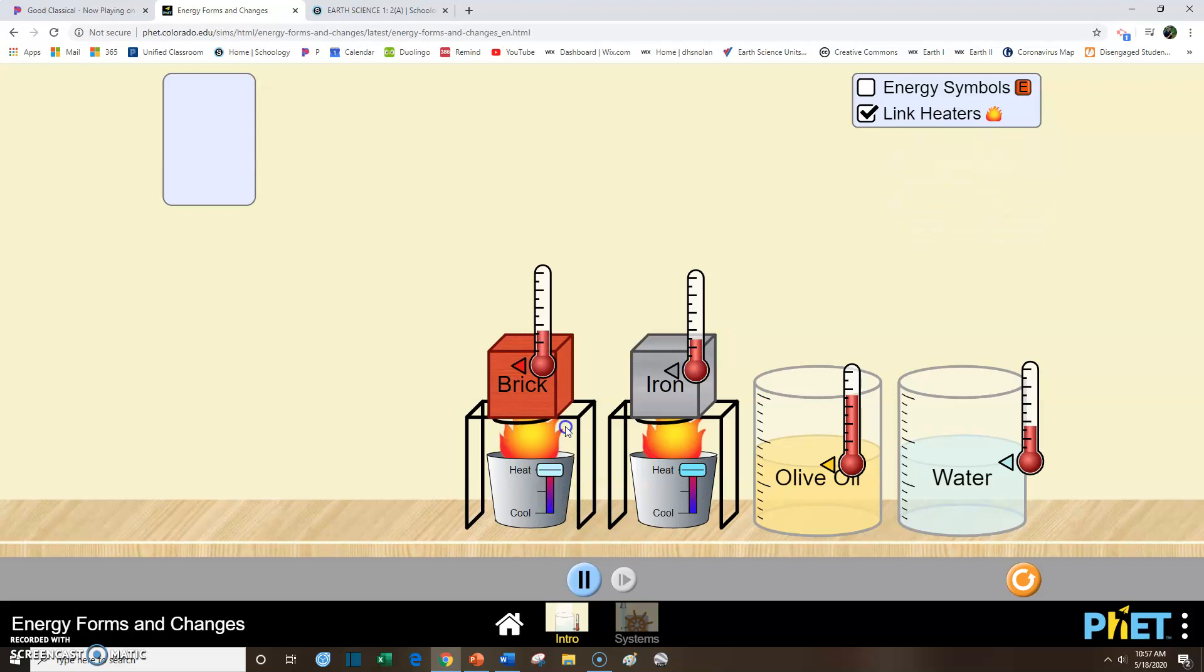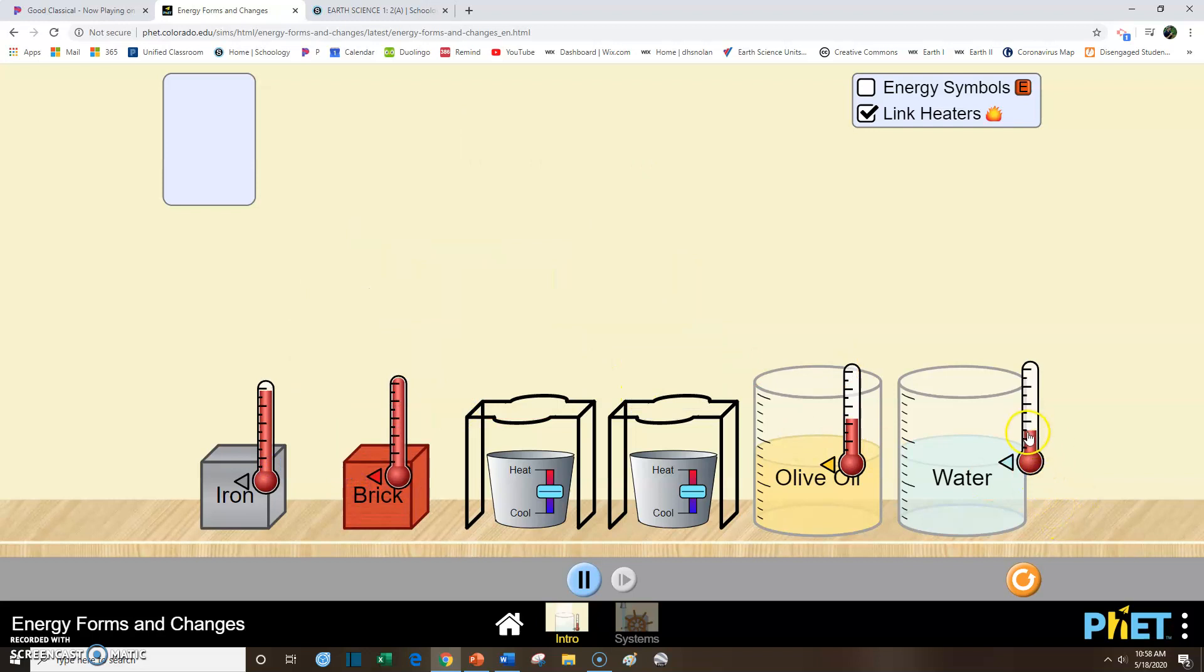Remember, the brick heats up way faster than pretty much anything else. So watch these temperatures climb. So of course the brick hits the maximum temperature first, and it just maxes out. And so does the iron. So the brick, iron, and olive oil all get way up to the very top of the thermometer, but the water doesn't. That's sort of interesting, that the water kind of stops right here.